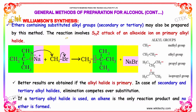Ethers containing substituted alkyl groups may also be prepared by this method. The reaction involves an SN2 mechanism on a primary alkyl halide, where the O⁻ on Na is replaced by the bromide ion and the methyl group replaces the Na⁺ ion, giving ether plus sodium bromide. The alkyl groups can be methyl, ethyl, propyl, or isopropyl.